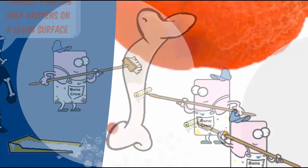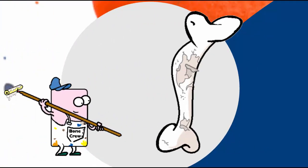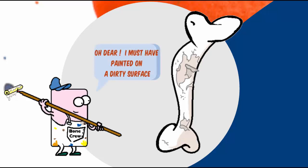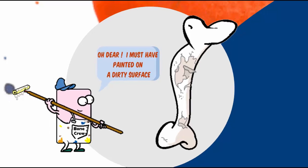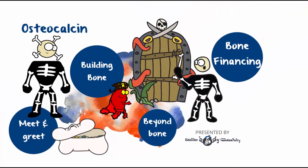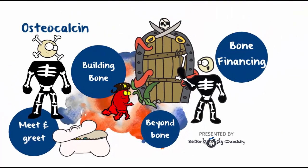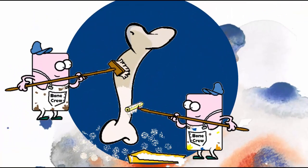This system ensures that the new bone is always laid down on a nice clean surface, and thus sticks well. If this doesn't happen — that is, the bone is laid down on a dirty surface — it could peel and crack, with potentially disastrous consequences. This process of cleaning off the grit and grime and then popping on a fresh coat of calcium paint happens day in and day out. It's called bone remodeling.